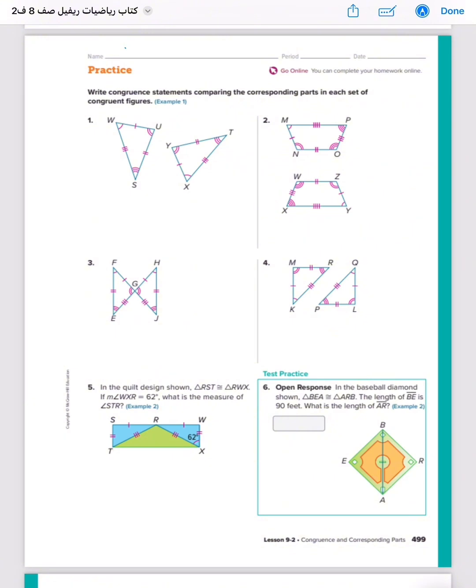Write congruent statements comparing the corresponding parts in each of the congruent figures. Question number one. Let's write corresponding parts, then corresponding angles, then corresponding sides. For that, we must write the name of this triangle. We have Triangle WUS. It's congruent - must write one line, two lines, three X - XYT. You must write in the same order. Let's write corresponding angles.